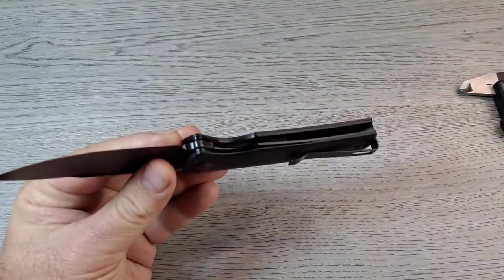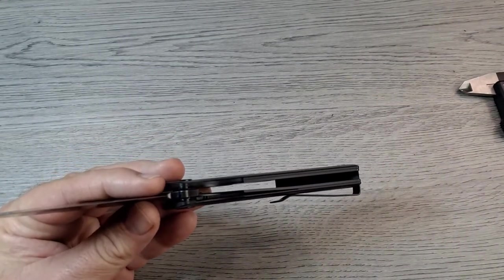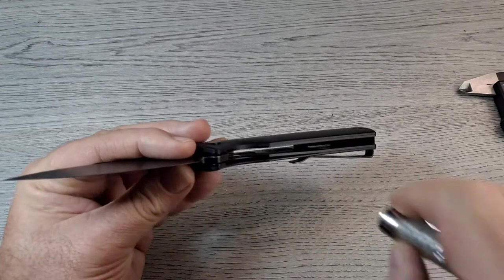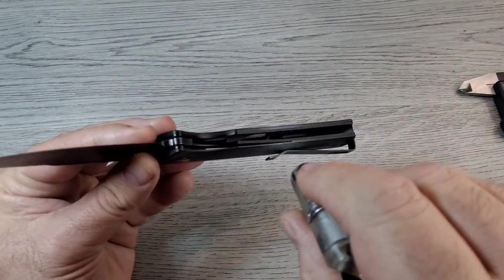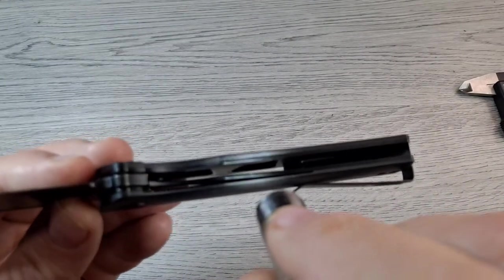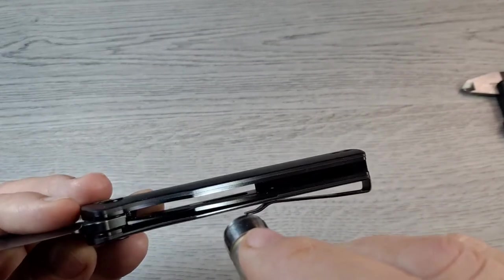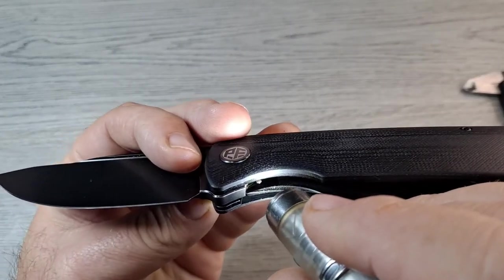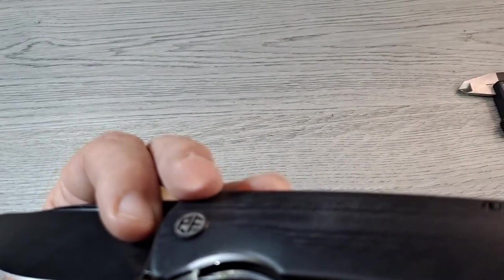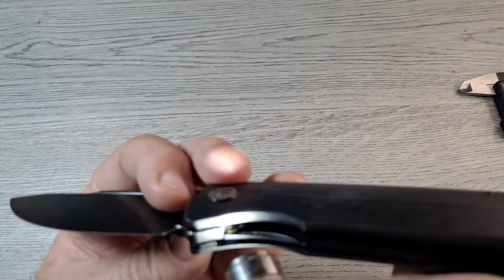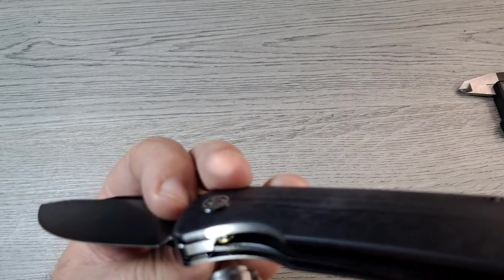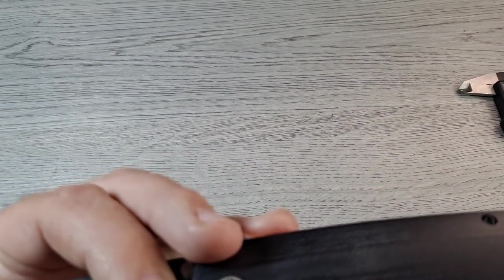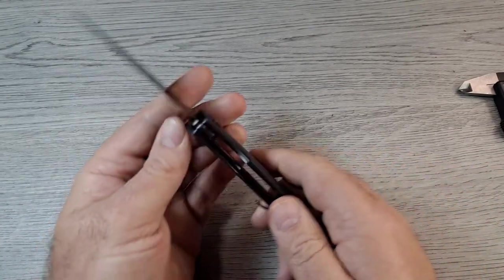Liners are kind of hard to see. Full liners but they are skeletonized. They're milled out pretty extensively. There's the detent ball, kind of looks like ceramic to me. Bearings I can barely see them. It might be ceramic ball bearings. Hard to tell, hard to tell until I tear it apart someday.